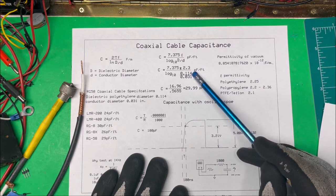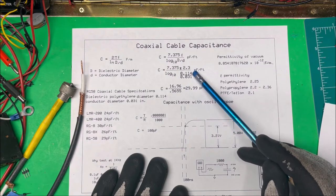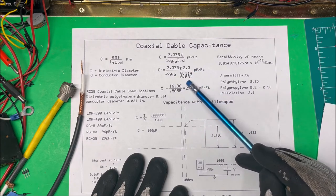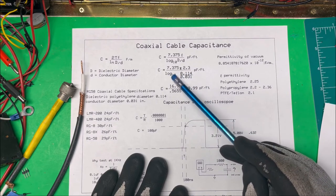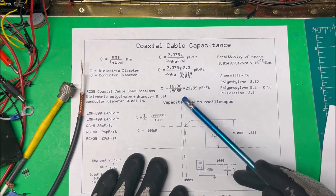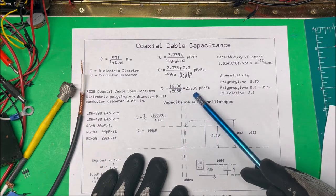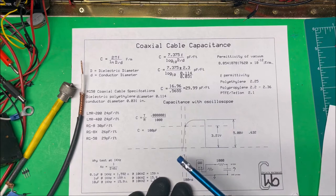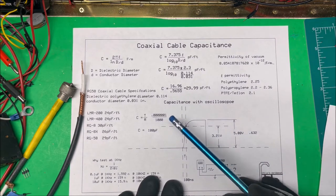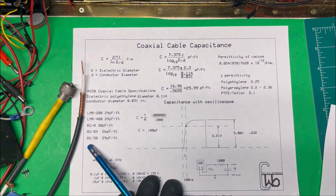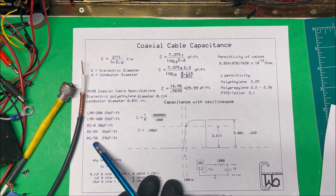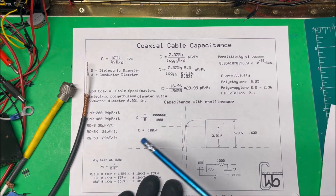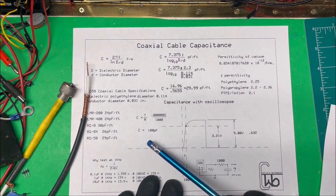Here's the dielectric diameter is 0.114, and the conductor is 0.031. I divide that out, take log 10 of that, and divide that into this number up here. It comes out to 29.99 picofarads per foot, which I wanted. And if I go to the charts, RG58, which I have here, is 29 picofarads per foot.